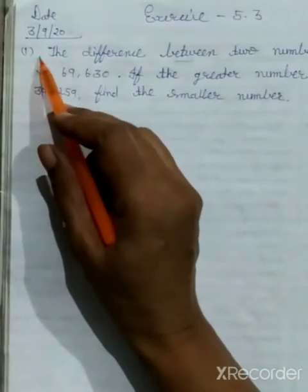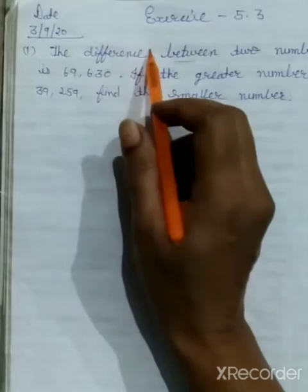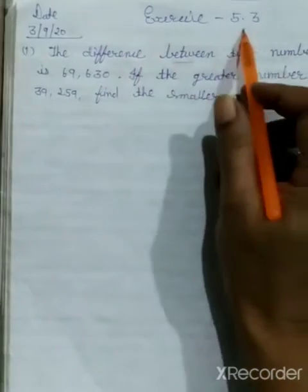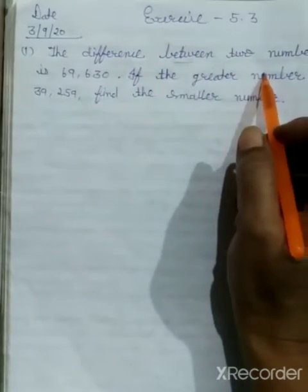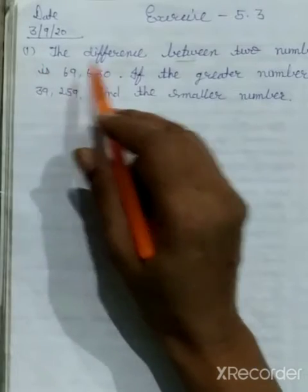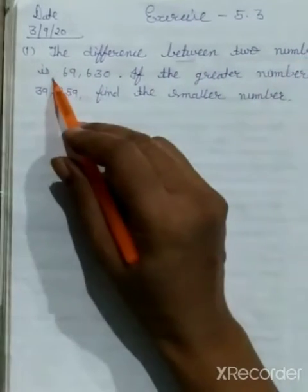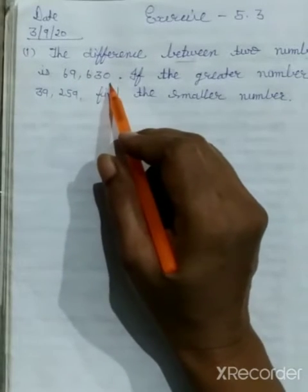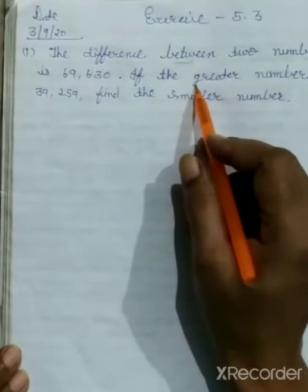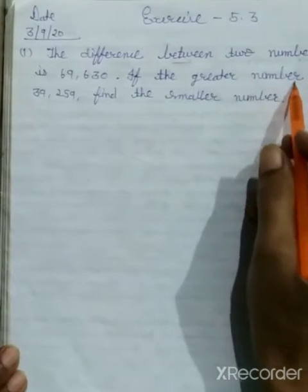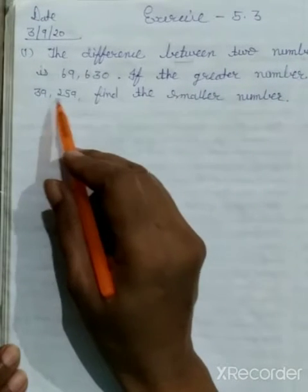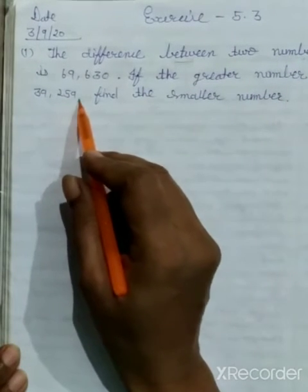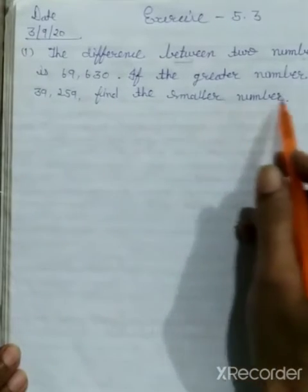First problem sums, we will solve problem sums. So first the difference between two numbers is 69,630. If the greater number 39,259, find the smaller number.